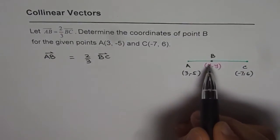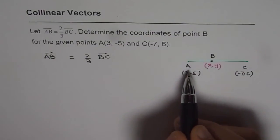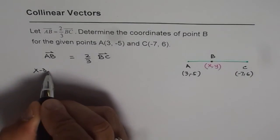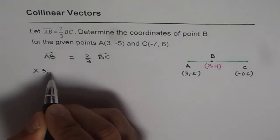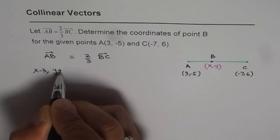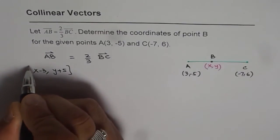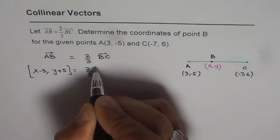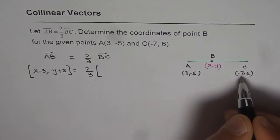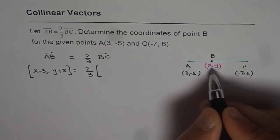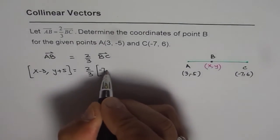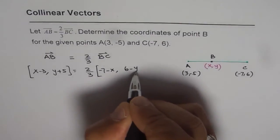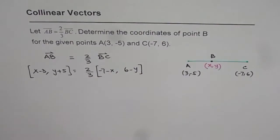Now if the coordinates of point B is X and Y, what is AB? AB is going to be X minus 3 and Y minus minus 5, or Y plus 5. So that is AB vector. And then we have 2 thirds of BC. Now B to C is minus 7 minus X, 6 minus Y. So that is BC.